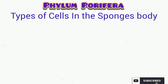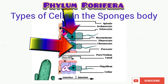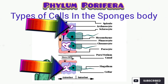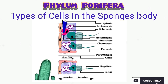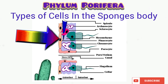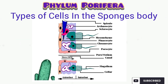Let's talk about the types of cells in the body of sponges. The types include, as you can see from the diagram, the choanocyte, the amoebocyte — which can actually differentiate or change into other types of cells — we also have the sclerocyte, pinacocyte, spongocyte, and others. Let's discuss them one after the other.